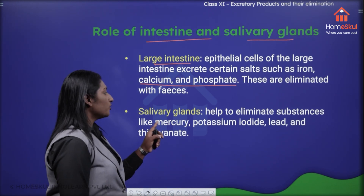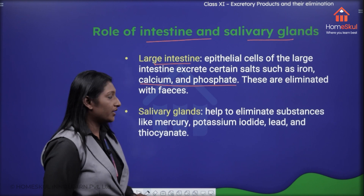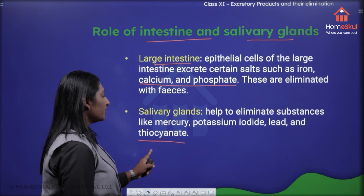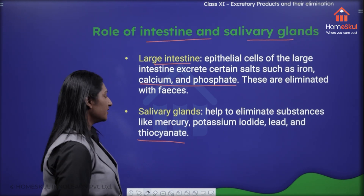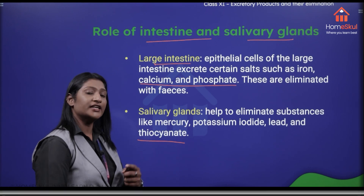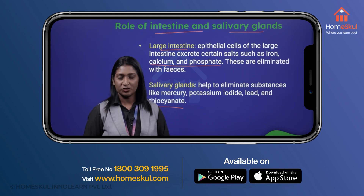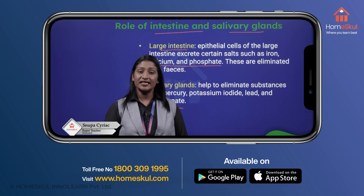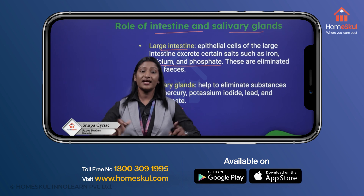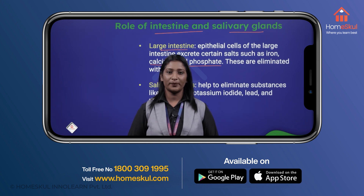Salivary glands help to eliminate substances like mercury, potassium iodide, lead and thiocyanate. These salts and ions are released by the salivary glands, enter into the alimentary canal, and are removed through the fecal matter. So, these are certain other organs that help in the process of excretion — other than the kidney, waste materials are removed through these organs as well. Hope you understand the topic. Thank you.